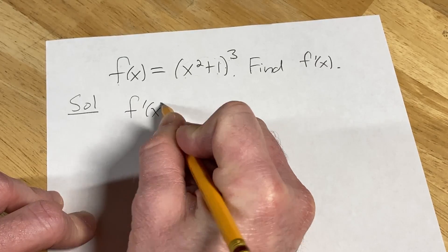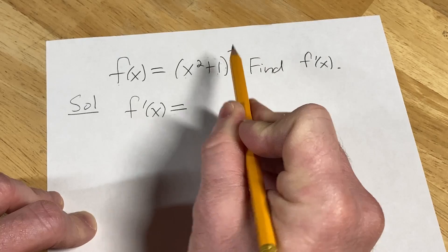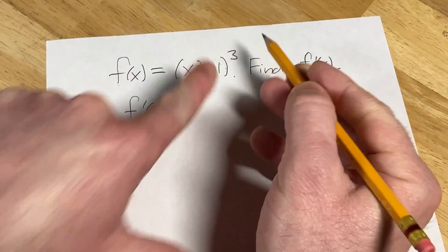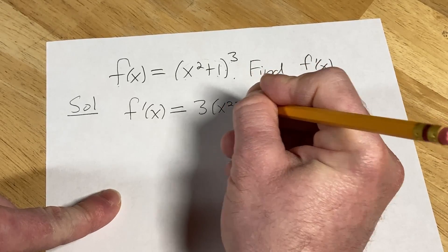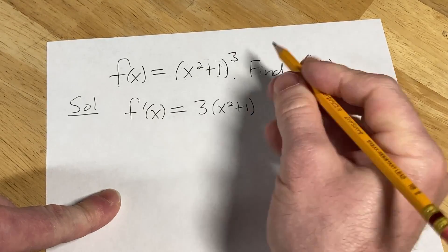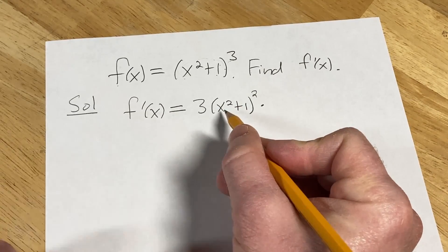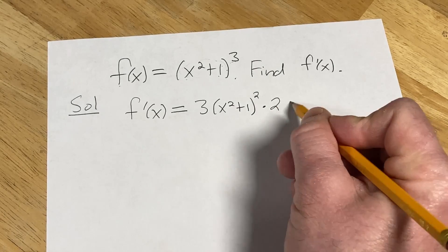So f'(x) is the derivative of the outside evaluated at the inside. What that means is you use the power rule—you put the 3 in front, so we get 3(x² + 1), then subtract 1 from the exponent to get 2, times the derivative of the inside. The derivative of x² is 2x and the derivative of 1 is 0, so we just get 2x.